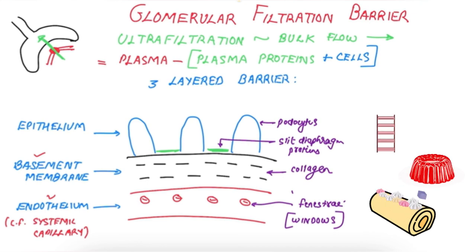So there is the epithelium which has podocytes and slit diaphragm proteins and looks like a ladder, the basement membrane made of collagen that looks like a gel, and the endothelium with fenestra windows that looks like a Swiss cake. Thank you. I am Dr. Swapnil.